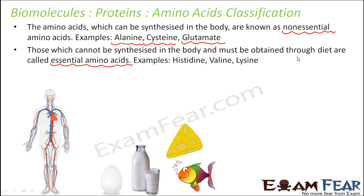On the other hand, there are amino acids which cannot be synthesized in the body, so they need to be provided from outside through your diet. This is why we are told to eat pulses, green vegetables, fish, and egg — because they are rich in protein and contain those essential amino acids which cannot be produced in your body. If you do not eat them, you will be deficient in those essential amino acids. So in order to get them, we should eat a protein-rich diet. Some of the essential amino acids are histidine, valine, and lysine.